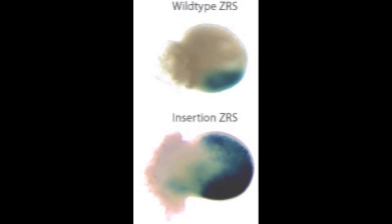When we did that with the 13 base pair insertion, we got ectopic expression of the enhancer, and specifically, not only in the posterior portion of the limb, but also in the anterior portion.